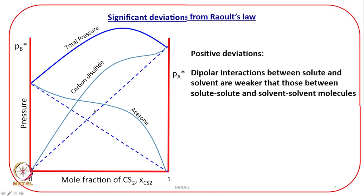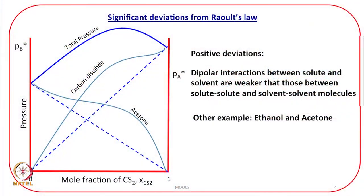If there are positive deviations from Raoult's law, then negative deviations are also possible. Another example showing positive deviations is ethanol and acetone: ethanol molecules form strong hydrogen bonds among themselves, and when acetone is added it interferes with the intermolecular hydrogen bonding of ethanol. That is why the mixture of ethanol and acetone shows positive deviations from Raoult's law.